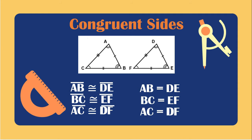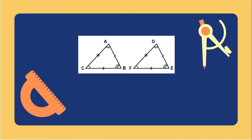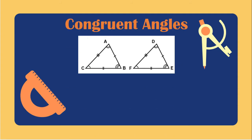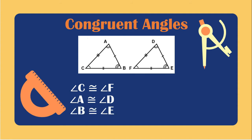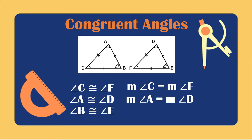Using the same set of triangles, we will now find the congruent angles. The angles with one tick mark: angle C is congruent to angle F. The angles with two tick marks: angle A is congruent to angle D. And angle B is congruent to angle E. If we use the equal sign for measurements, we write: the measurement of angle C equals the measurement of angle F, the measurement of angle A equals the measurement of angle D, and the measurement of angle B equals the measurement of angle E. When using the equal sign for measurements, we add M before the angle.